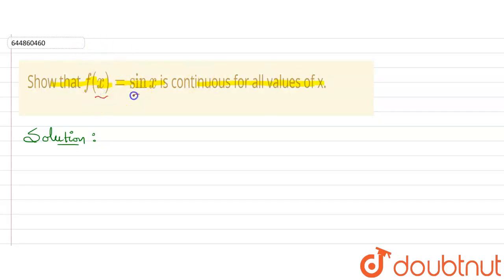So function f(x) is given to us in the question, it is equal to sine x and we need to prove that it is continuous for all values of x. How will we prove? Let me give you a brief description.